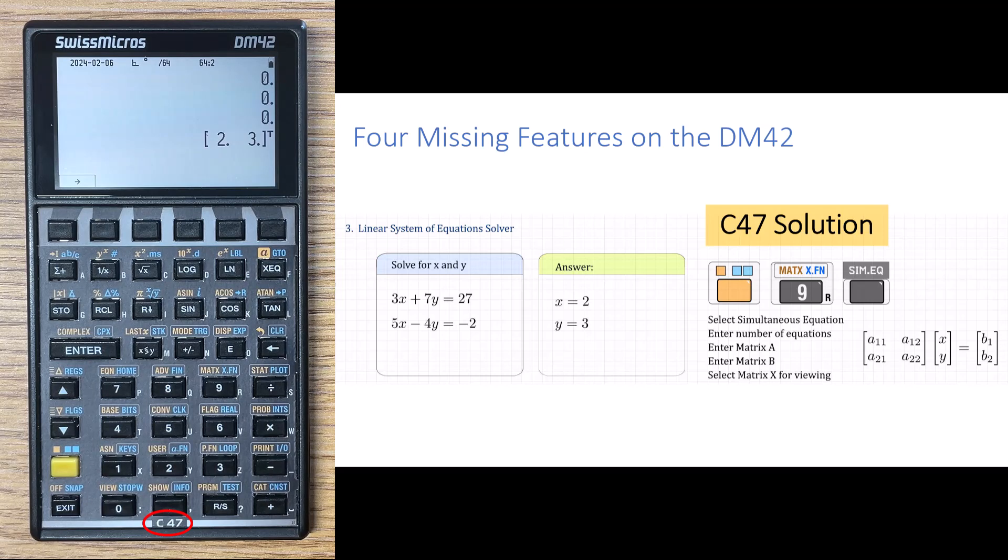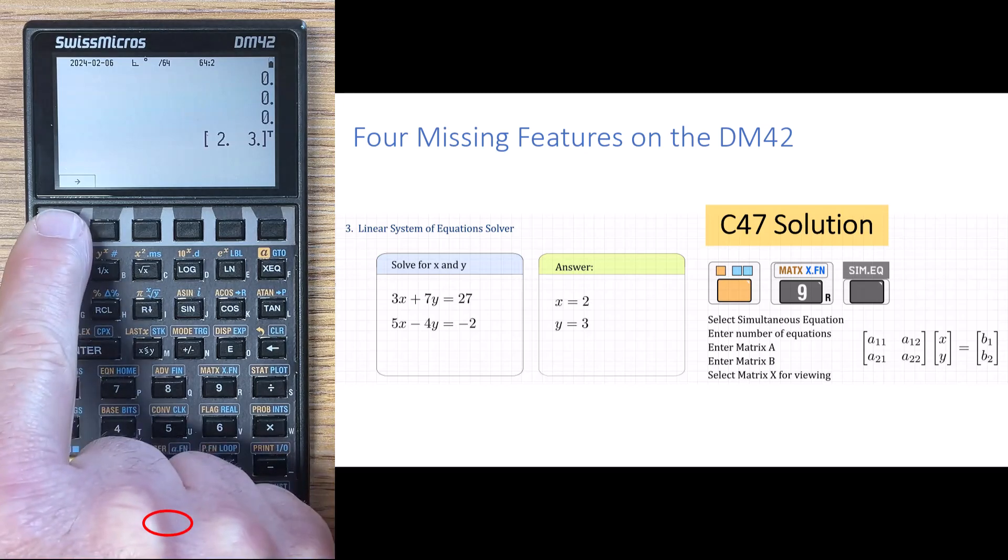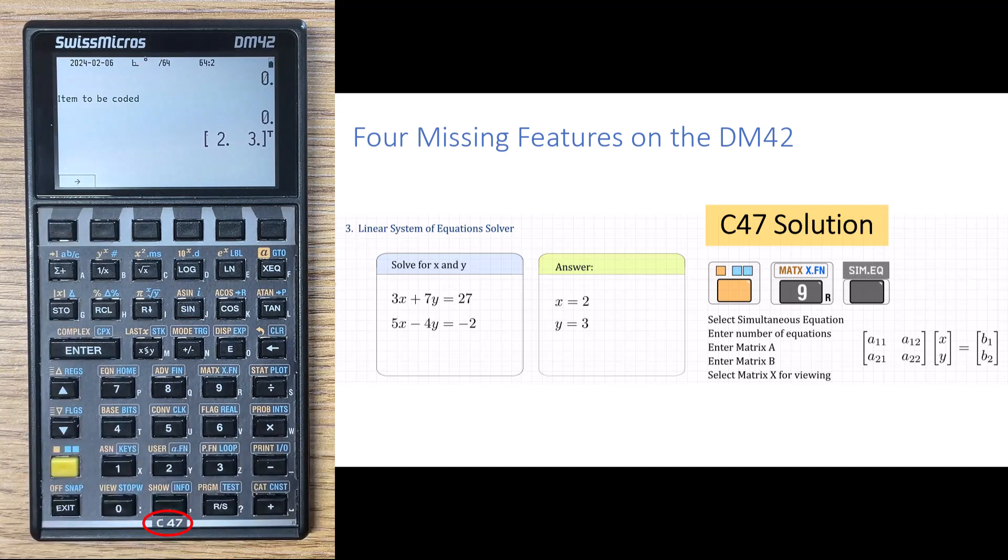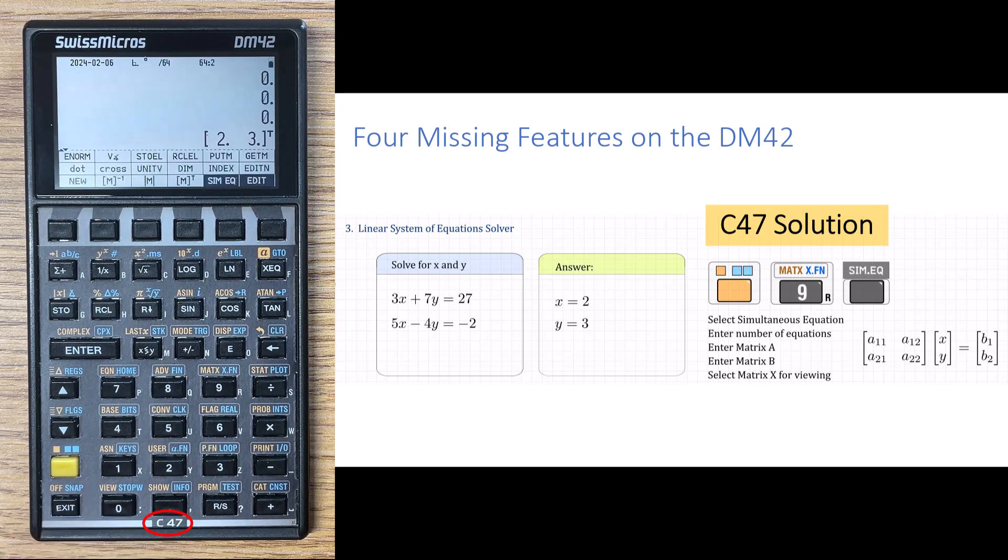Now one annoyance for me is that I want to put these two answers onto the stack. For whatever reason, I might need to use them for additional calculations. I think this right arrow function is meant to put them on the stack. It says item to be coded. So I guess that's a feature that's still coming. Since this arrow doesn't do what I want, I'll exit out of this and show you how to get these numbers onto the stack.